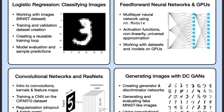We will then move on to implement multilayer neural networks using the nn.Module class in PyTorch. We will learn about activation functions, non-linearity, and the universal approximation theorem. We will also learn how to work with large datasets and how to move our models to the GPU for faster computation.